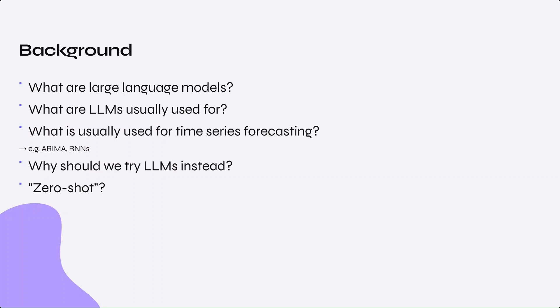So what is usually used for time series forecasting? Traditional time series forecasting uses statistical methods like ARIMA. Other methods include modern deep learning techniques such as RNNs — a type of neural network architecture well-suited for time series forecasting due to their ability to capture temporal dependencies and sequential information.